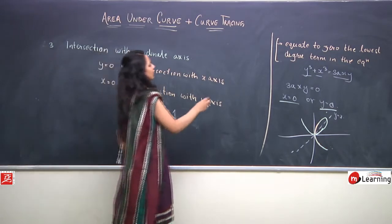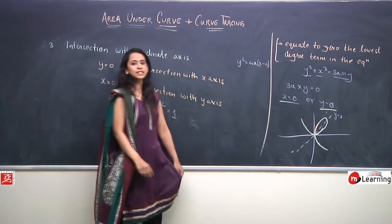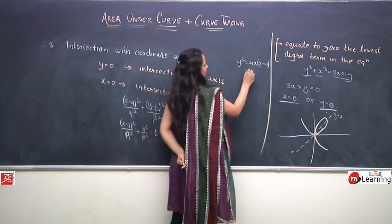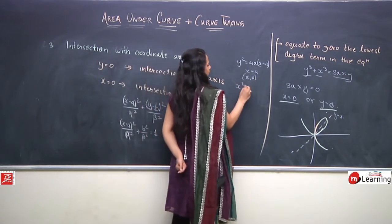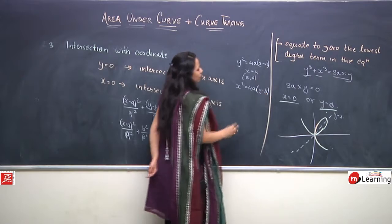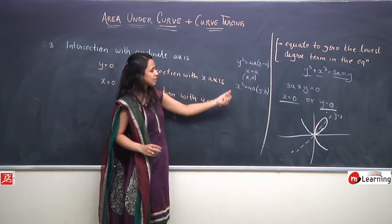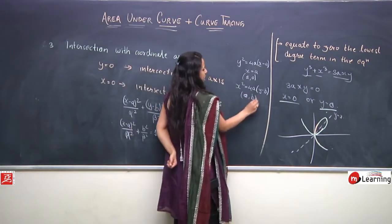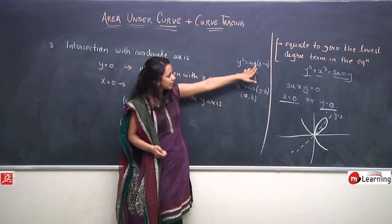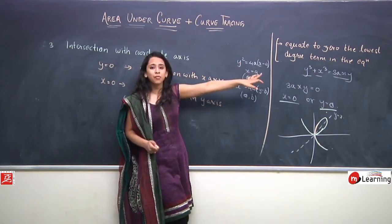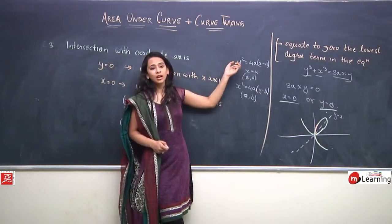For the curve y² = 4a(x - a), putting y = 0 gives x = a, so (a, 0) is the intersection with the x-axis. For x² = 4a(y - b), putting x = 0 gives y = b, so (0, b) is the intersection with y-axis. If putting x = 0 gives y² = -4a², which is not possible, the curve does not intersect the y-axis.